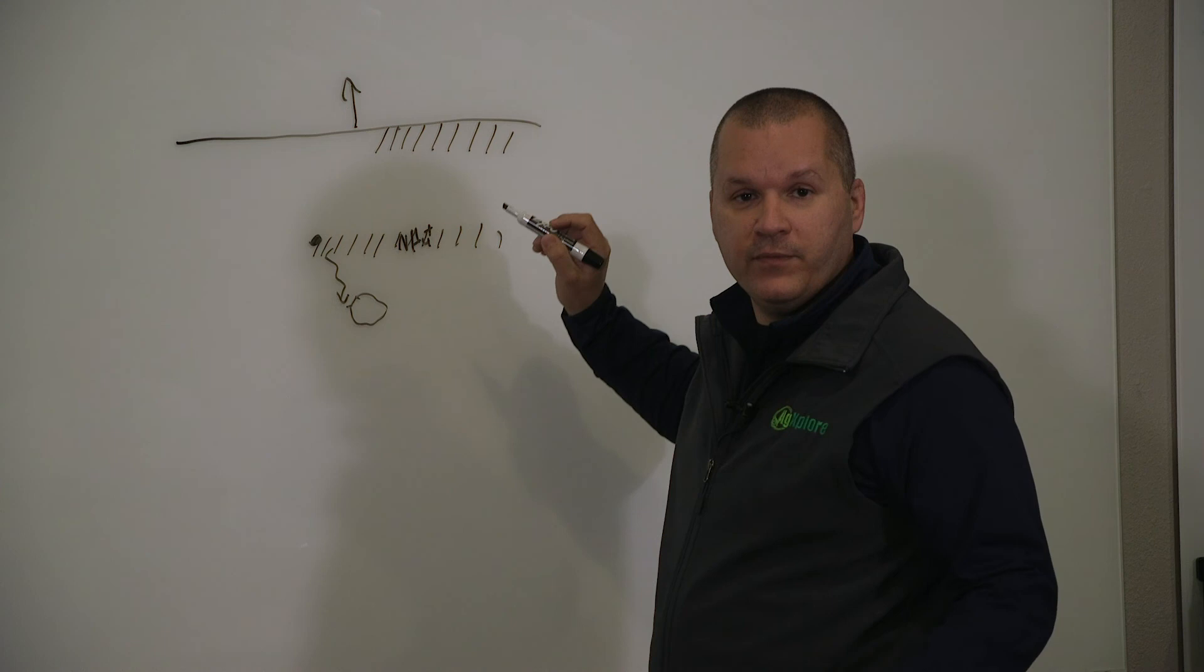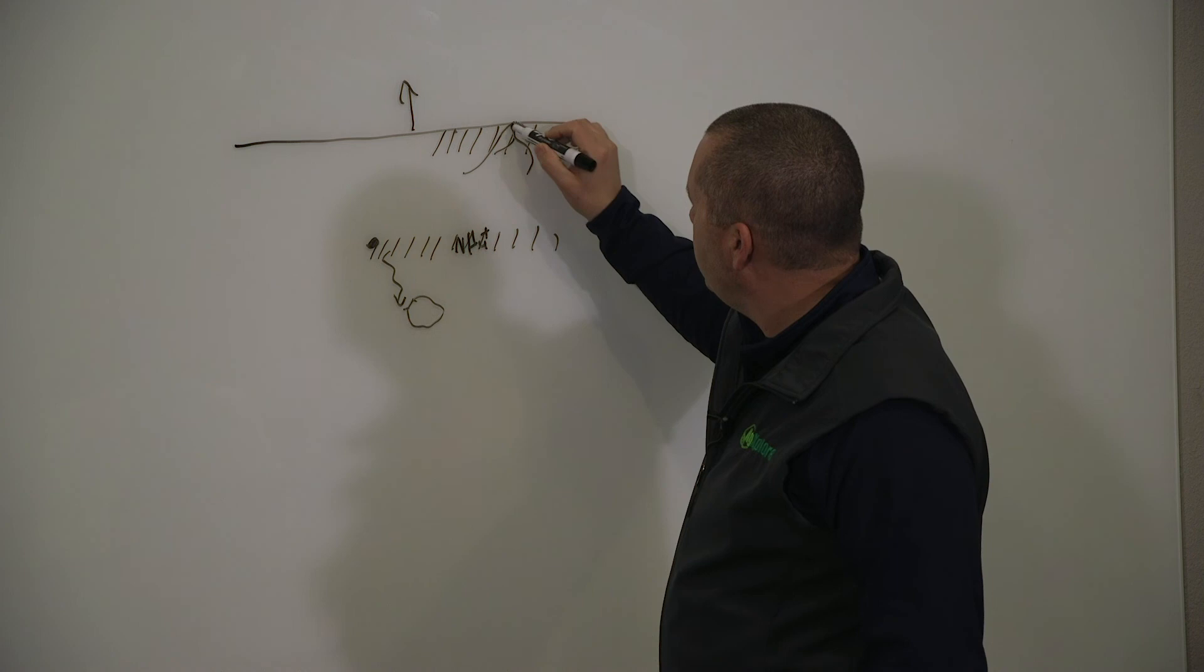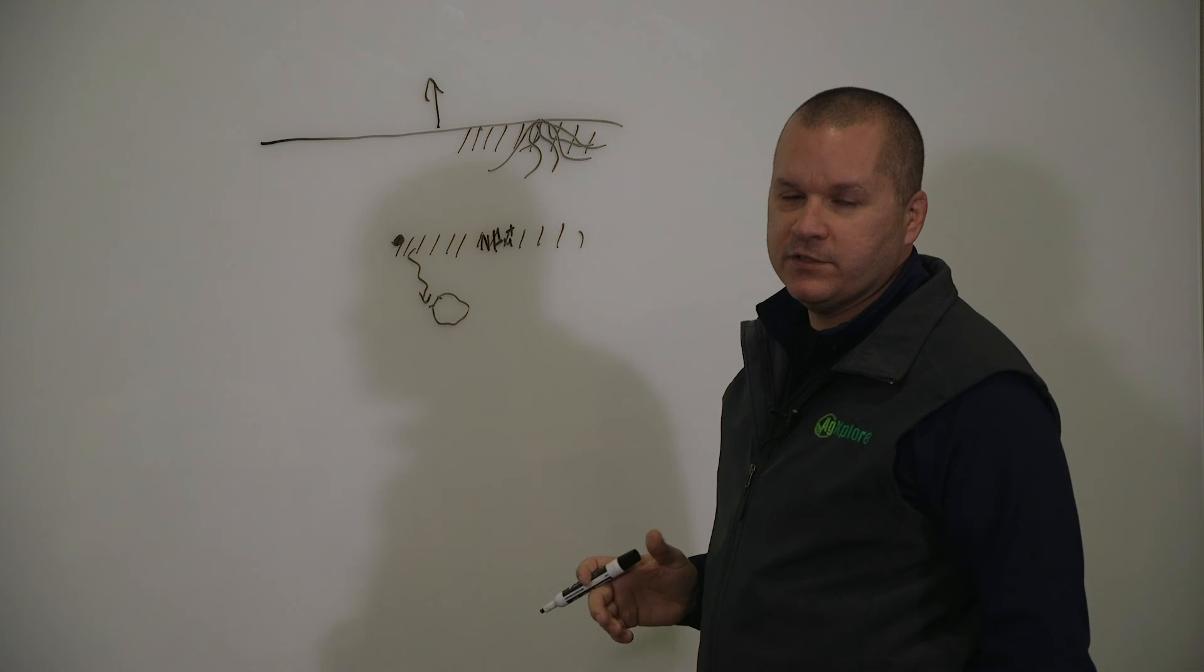The beauty in that is if you're a corn farmer putting nitrogen out, that root system is going to be right here. And it's going to be in a high solution of nitrogen. And you've got to keep that nitrogen right around that root system.